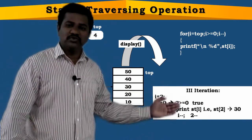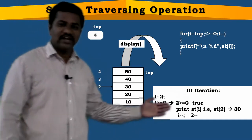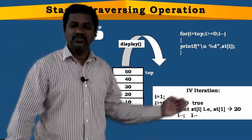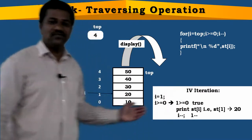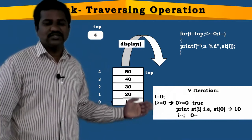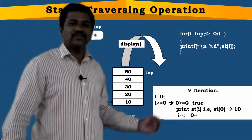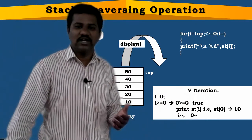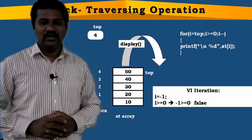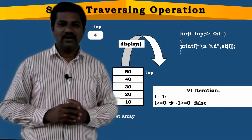0 >= 0 is true, so we print st[0] which is 10. Then i-- makes i = -1. -1 >= 0 is false, so it comes out of the loop. This is how we print elements starting from the top to the bottom element of the stack.